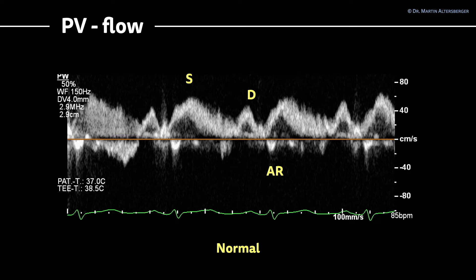You have a normal systolic flow and a normal diastolic flow — the diastolic flow is a little bit smaller than the systolic flow. This was a TEE study, not a TTE signal, so in TEE you can very often nicely delineate those signals.